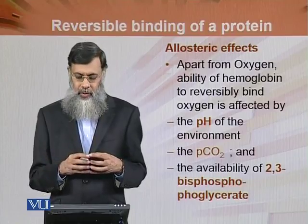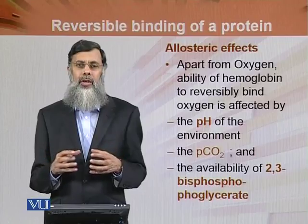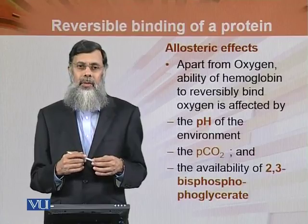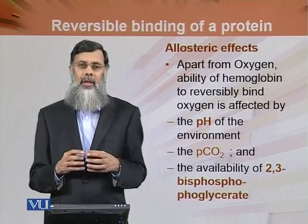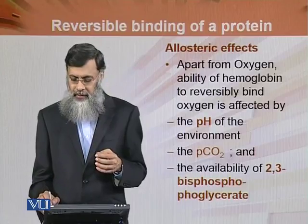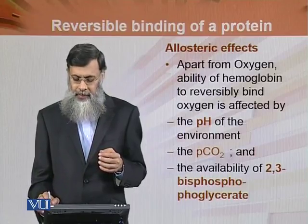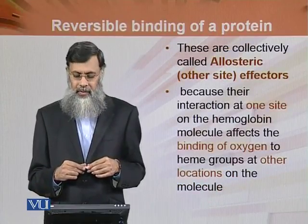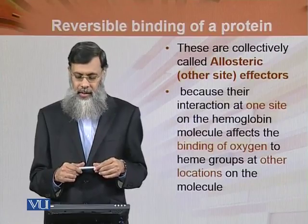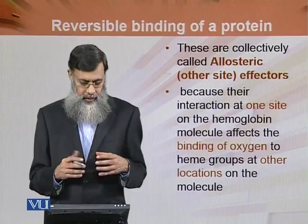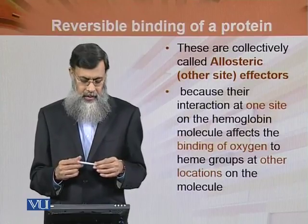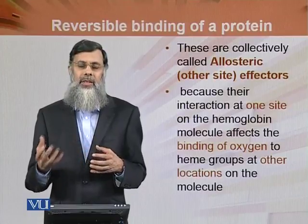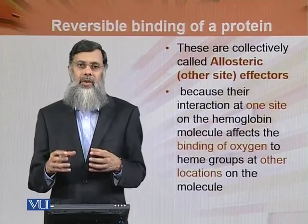یہ تینوں چیزیں — pH، partial pressure of carbon dioxide، اور 2,3-bisphosphoglycerate — hemoglobin کی oxygen affinity اور reversible binding capacity کو کس طرح change کرتی ہیں۔ These are collectively called allosteric effects. Allosteric میں 'allo' ایک Greek word ہے جس کا مطلب ہے 'other' — یعنی جس سائٹ پہ oxygen لگ رہی ہے اس کے علاوہ کسی اور سائٹ پہ action ہو رہا ہے۔ This is the allosteric effect.